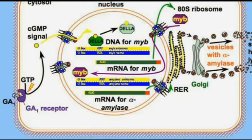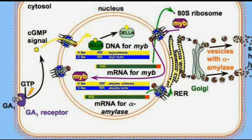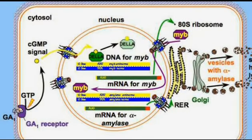The cell surface GA receptor complex interacts with heterotrimeric G protein, initiating two separate signal transduction chains. First, a calcium-dependent pathway involves cGMP. This yellow spot at the left side shows the cGMP pathway which initiates the transduction in a circular manner.